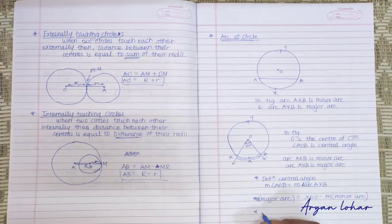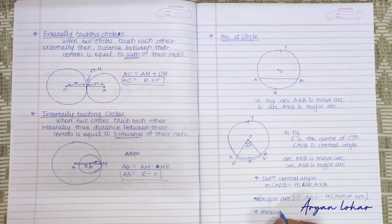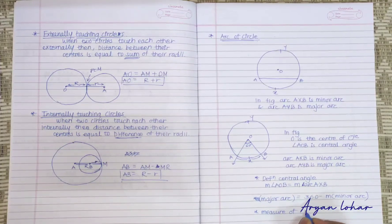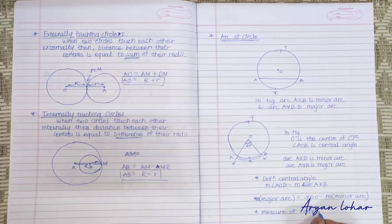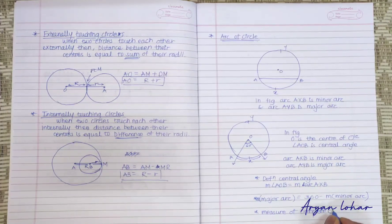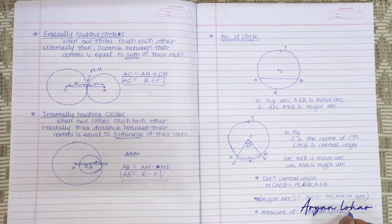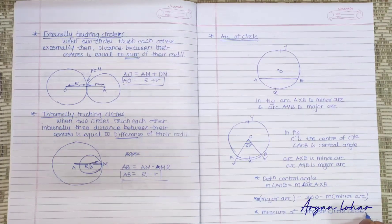And measure of complete circle is 360 degrees.